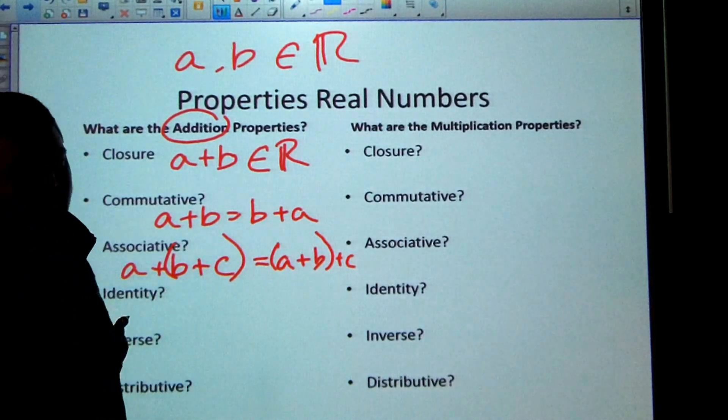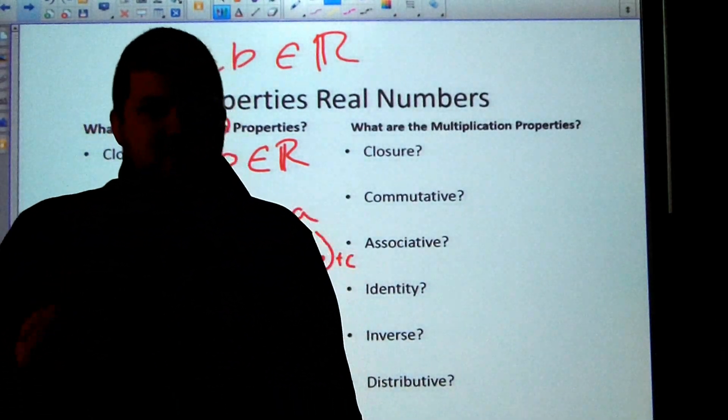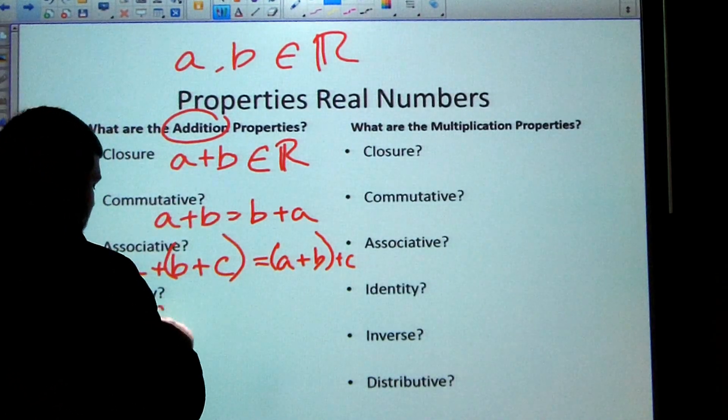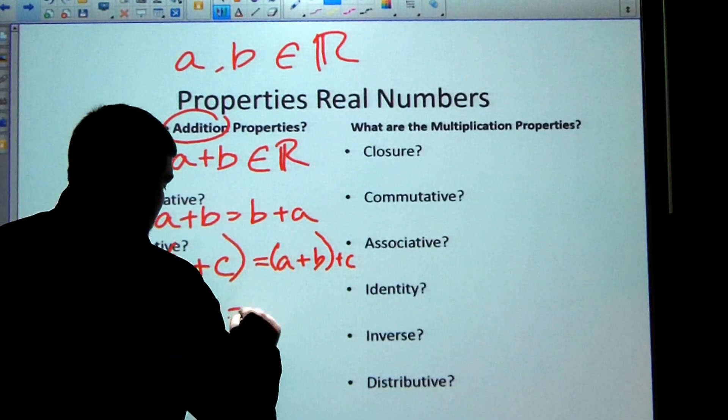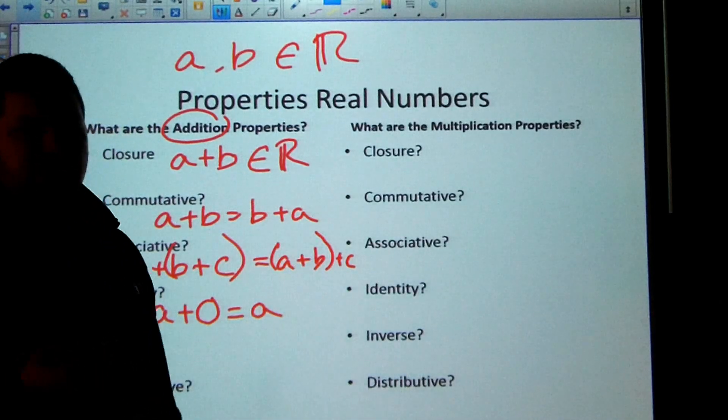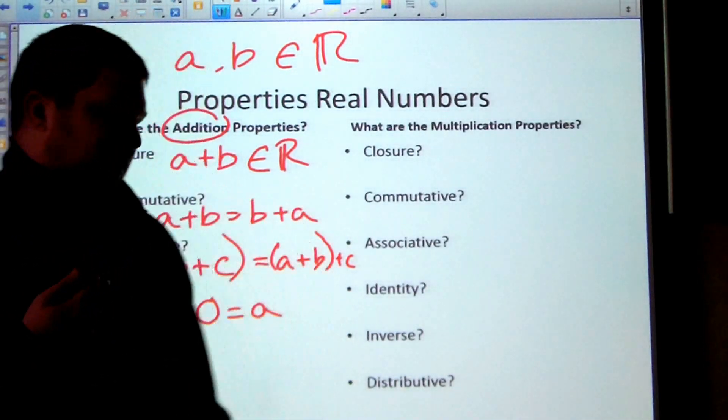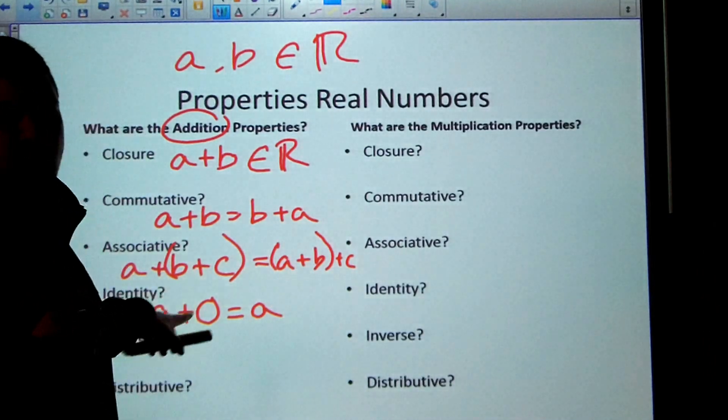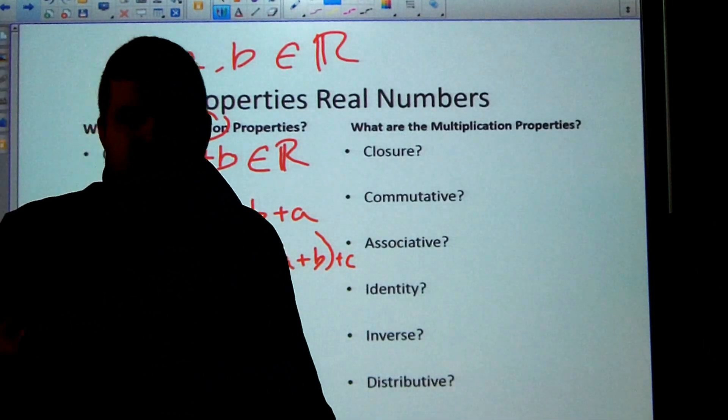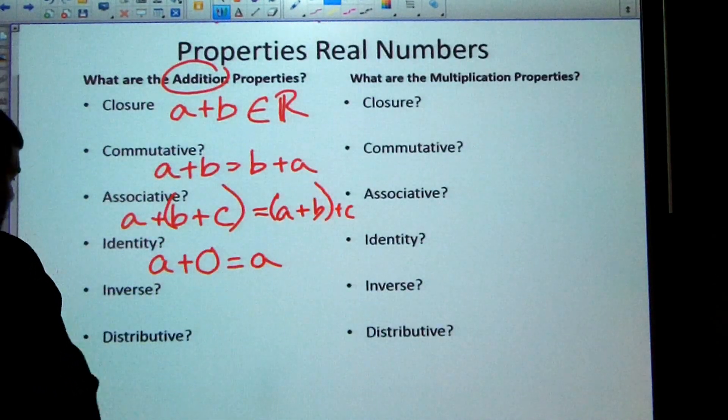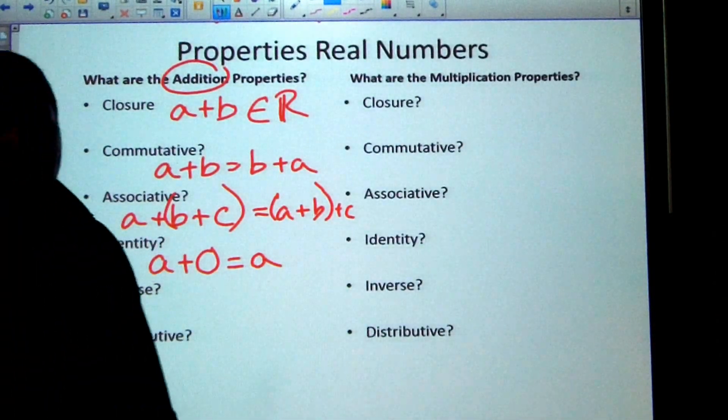The identity. So here we have what's called an identity element. Zero is our identity element for addition. So A plus zero equals A. All that means is identity is you get yourself. So identity is like your self-identity. If I take any number and add it to zero, then I'm going to get that same number back. I keep its identity. It doesn't change.